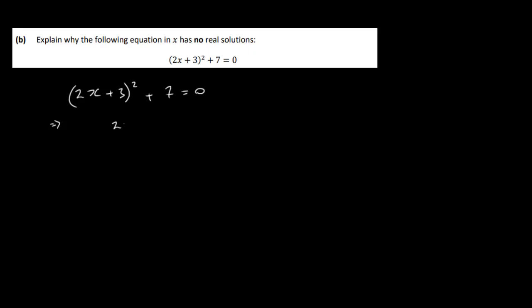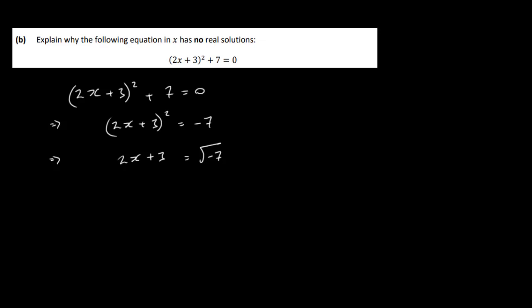Let's have a look at the next part: explain why the following equation in x has no real solutions. We have 2x plus 3, all squared, plus 7 equal to 0. You can bring the 7 over, so 2x plus 3 all squared equals minus 7. That gives 2x plus 3 equals the square root of minus 7 — you can't find the square root of minus 7 as a real number, so there are no real solutions.